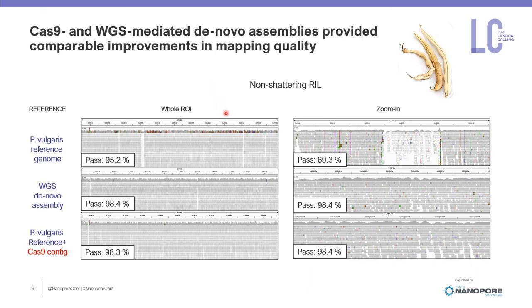We then checked whether mapping quality was actually improved. Illumina data were aligned first on the new cultivar-specific reference genome generated using standard genome sequencing data, and second on the P. vulgaris reference where the region of interest was replaced with the contig generated using Cas9-targeted enrichment data. The BAM files from the new assemblies are cleaner: most structural variants and dense single nucleotide variant regions disappeared. The percentage of genotyped positions increased from about 95% to 98%, with even more drastic improvements in some regions. Notably, Cas9 and full genome sequencing-mediated nanopore assembly provided comparable improvements in mapping quality.